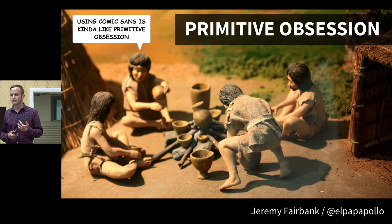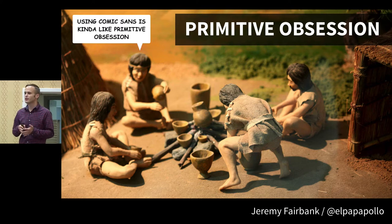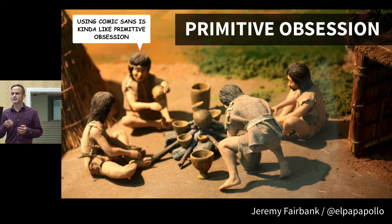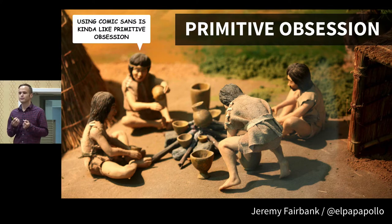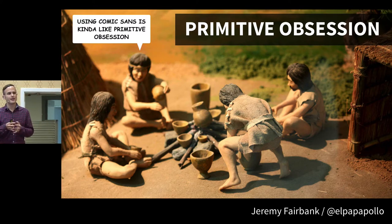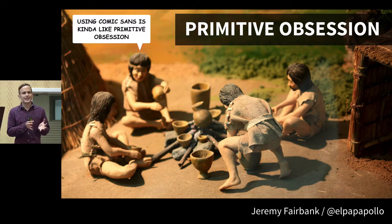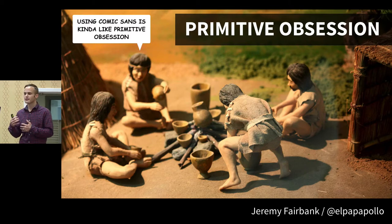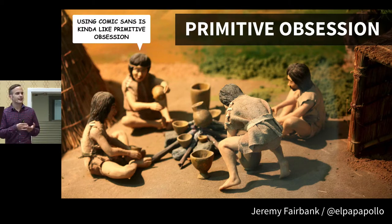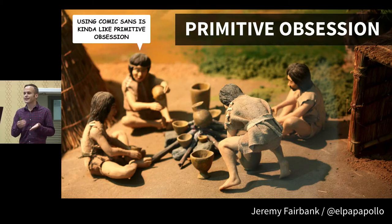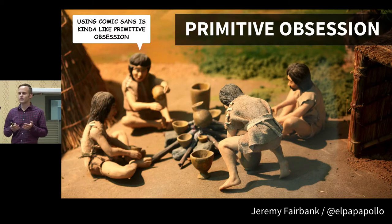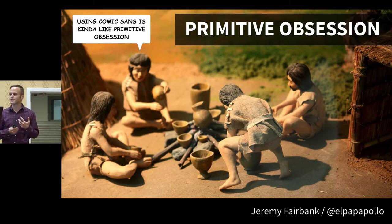I was embracing something called primitive obsession — the act of using primitive data types like Booleans, strings, and integers to represent domain concepts. Examples include using floats for currency or strings for a status field. In my applications, I had a domain concept of remote state: waiting to fetch, fetching, successfully retrieved, or error. Representing that single domain concept with multiple Boolean values led to extra code complexity and confusion about how to check which state I'm in.